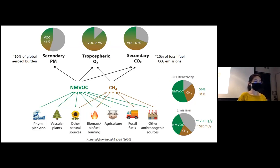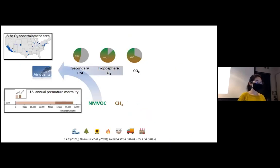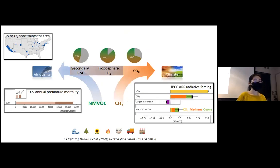NMVOC and methane together constitute 87 percent of the total OH reactivity in the atmosphere. The photochemistry of VOC eventually contributed to 45 percent of secondary particulate matter formation, 87 percent of tropospheric ozone formation, and 70 percent of secondary CO2 production. This picture overall highlights the central importance of VOC in atmospheric chemistry, from emissions to the formation of secondary pollutants. VOC and their secondary products directly and indirectly affect air quality.